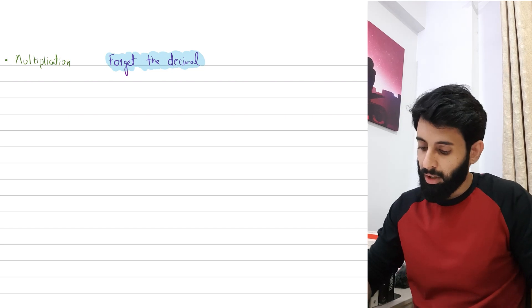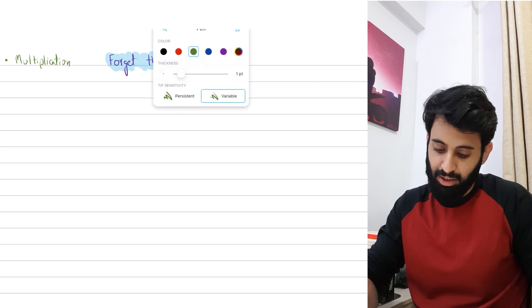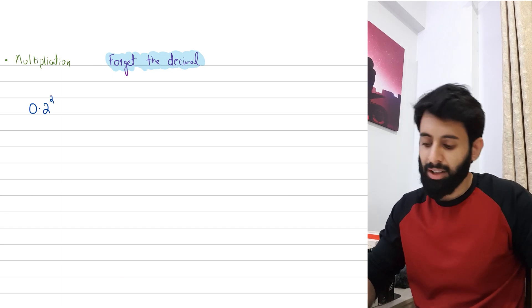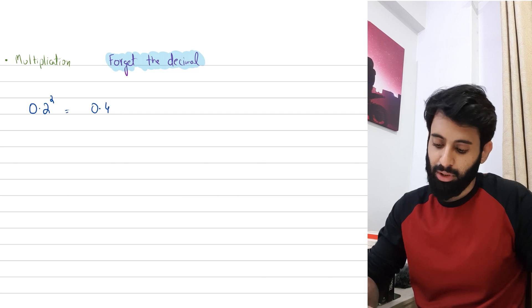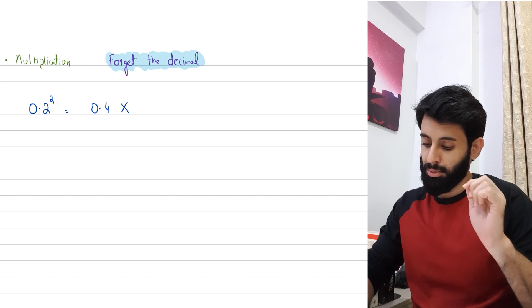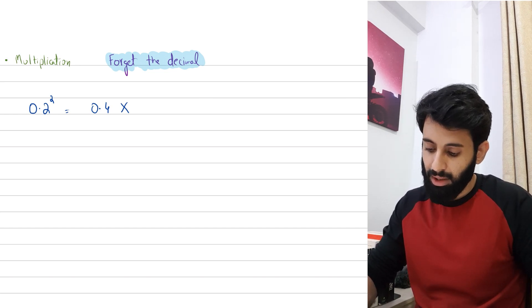Before I dive into example questions, there's something I want to mention. If I were to ask you what 0.2 squared is, some of you might jump to conclusion and say it's 0.4. Well, you're wrong, you're absolutely wrong, and the reason is that you jump to conclusion without paying attention to how decimals are multiplied.